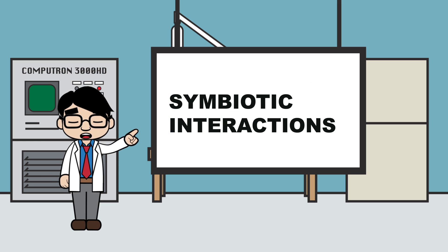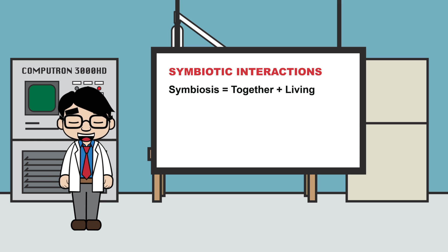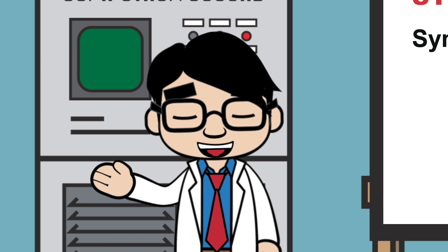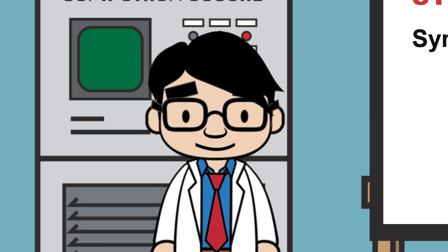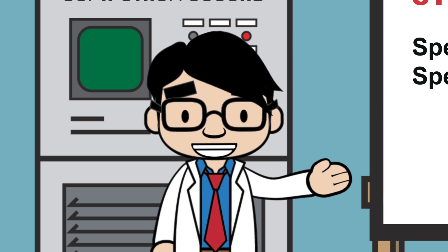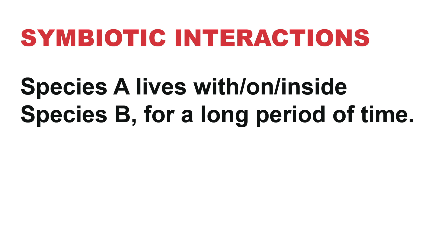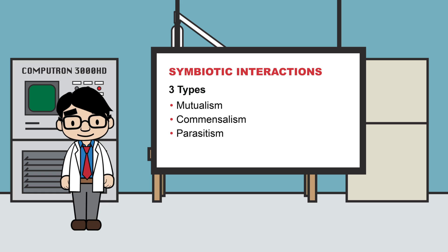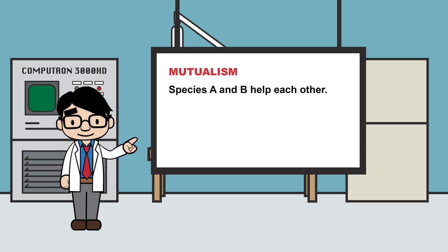Symbiotic interactions require species to live in symbiosis. The word symbiosis can be broken down to 'together' and 'way of living,' or simply put, living together — meaning species A lives with, on, or inside species B for a long period of time. Three types of symbiotic interactions include mutualism, commensalism, and parasitism.